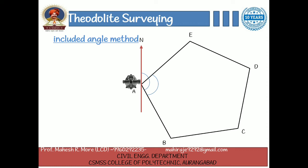Similarly, the other angles B, C, D, and E are measured. The arithmetic check is applied as follows: (2n - 4) × 90 degrees equals the sum of interior angles.